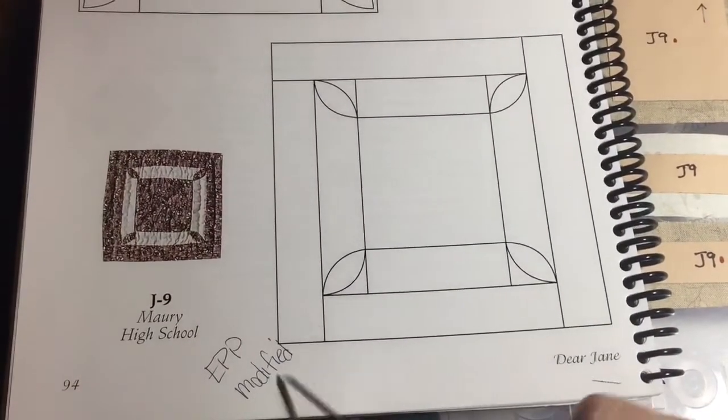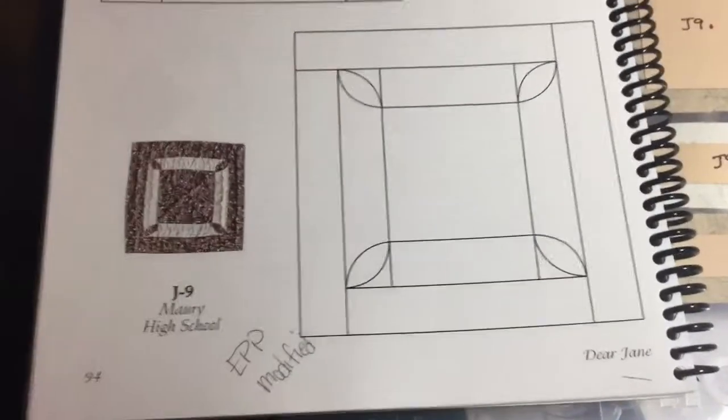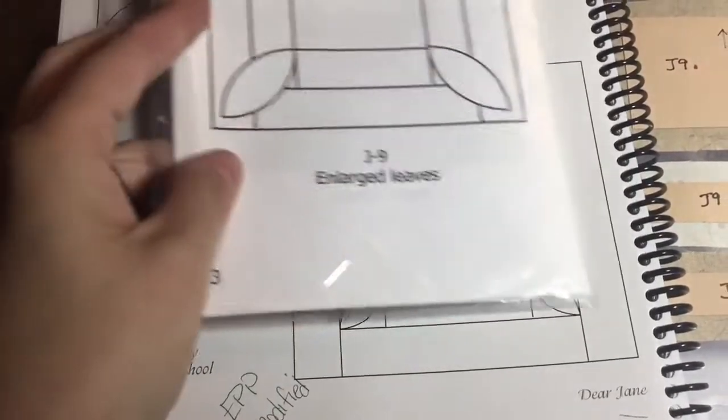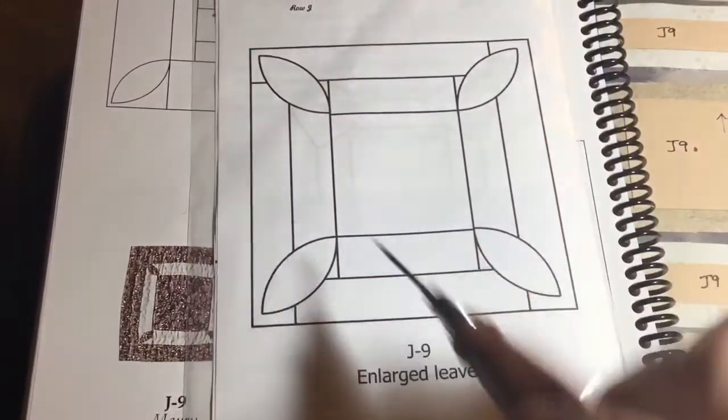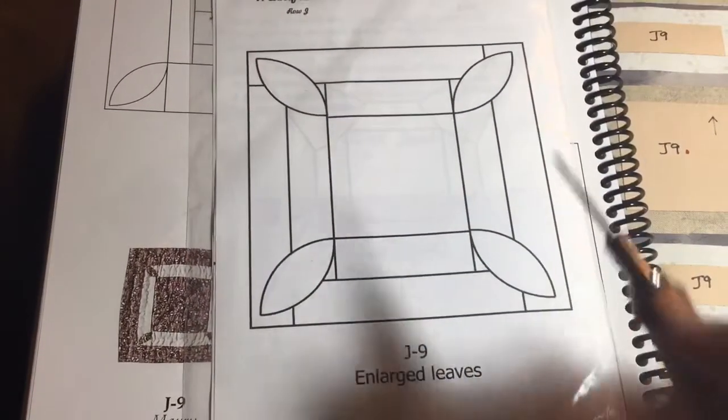This is an EPP modified block, which means there have been a couple things that have been changed. So I'm going to reference my booklet, and my booklet has enlarged leaves, which is the only change.